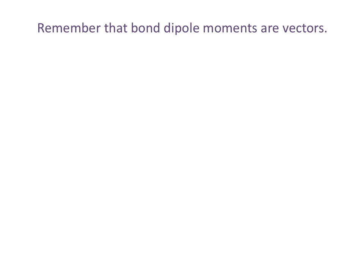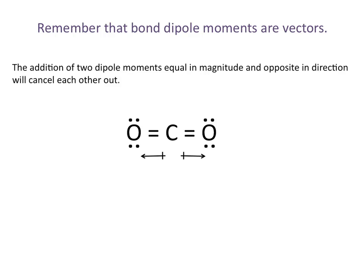Remember that bond dipole moments are vectors. In the case of carbon dioxide, you have two polar bonds because there is a difference in electronegativity between oxygen and carbon. However, because these dipole moments are of equal magnitude and opposite direction, they cancel each other out. So overall, the molecule CO2 is nonpolar.